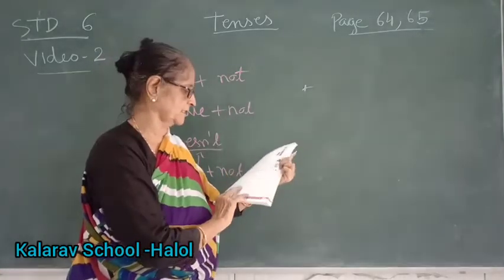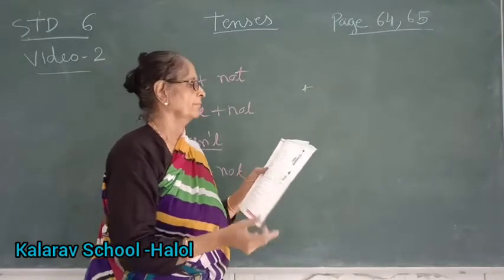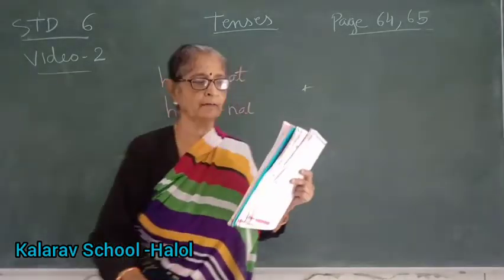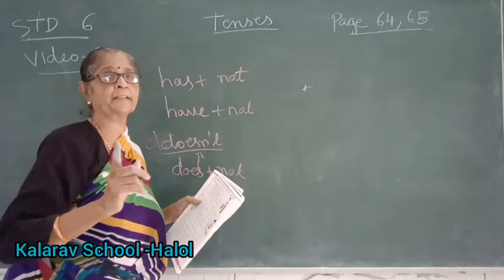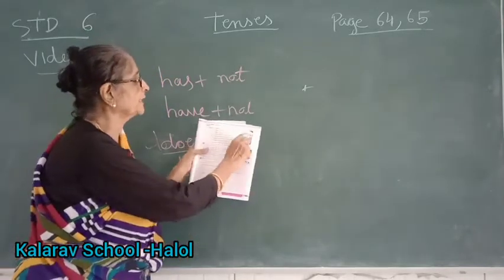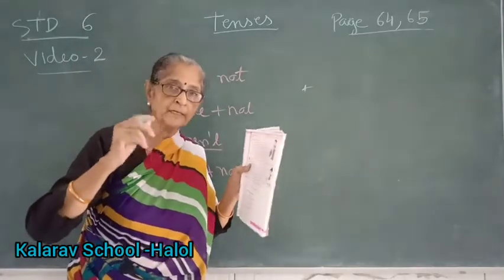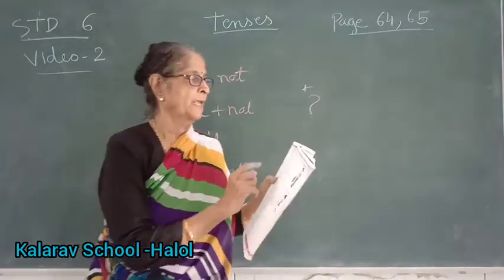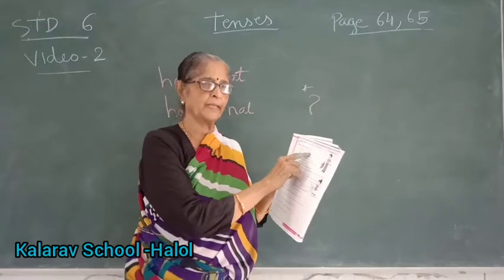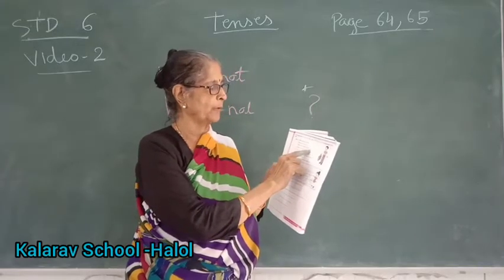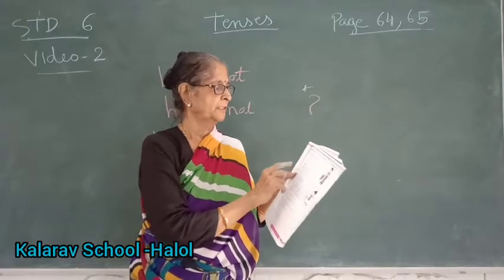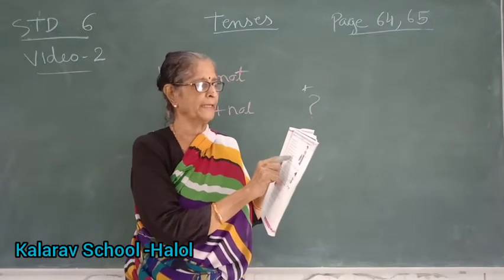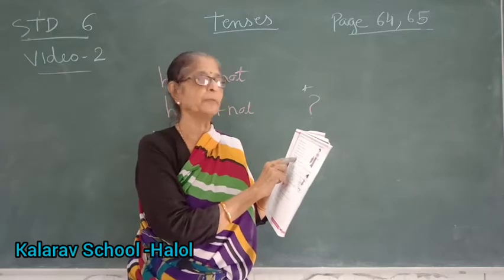Now page number 65. In interrogative sentences we use has, have, had, did, does, do at the beginning of a sentence to make it a question. Examples: 'Have you packed your bag?' 'Has she written the letter?' 'Did you plan your holidays well?' 'Does Sunidi have a hand blender?' 'Do the students have their report cards?' 'Had the cake been cut before all the guests arrived?' 'Have the plants been watered?' 'Does the gardener know enough about plants?'